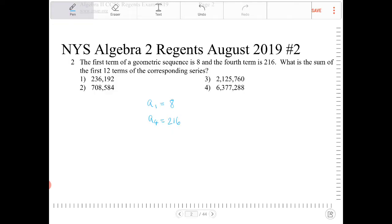Okay. And there's a geometric sequence, so that means there's going to be a common ratio rather than a common difference. What is the sum of the first 12 terms of the corresponding series?